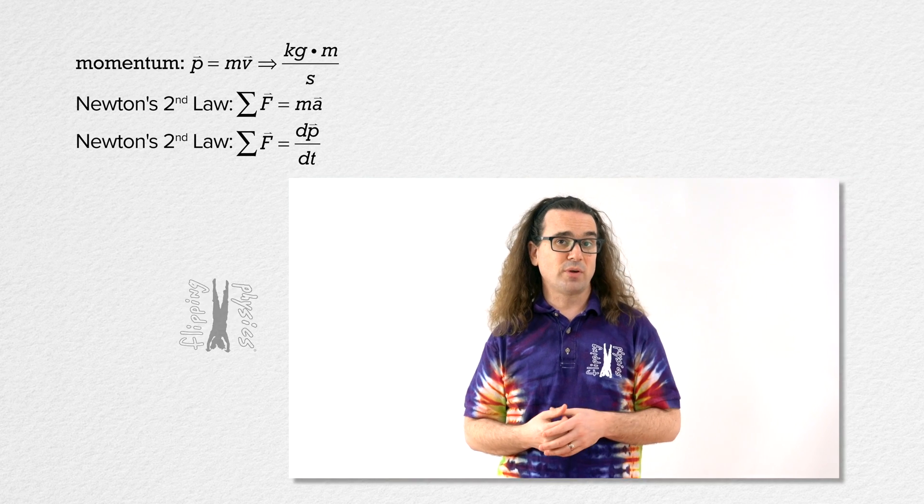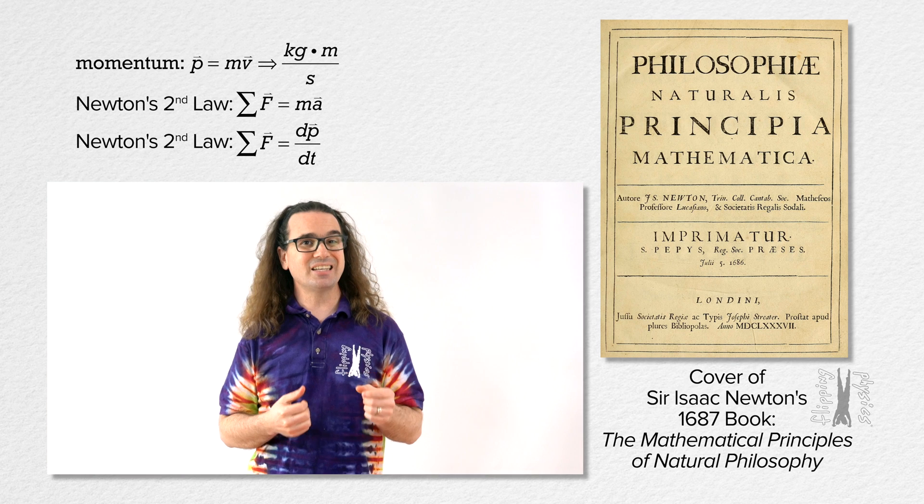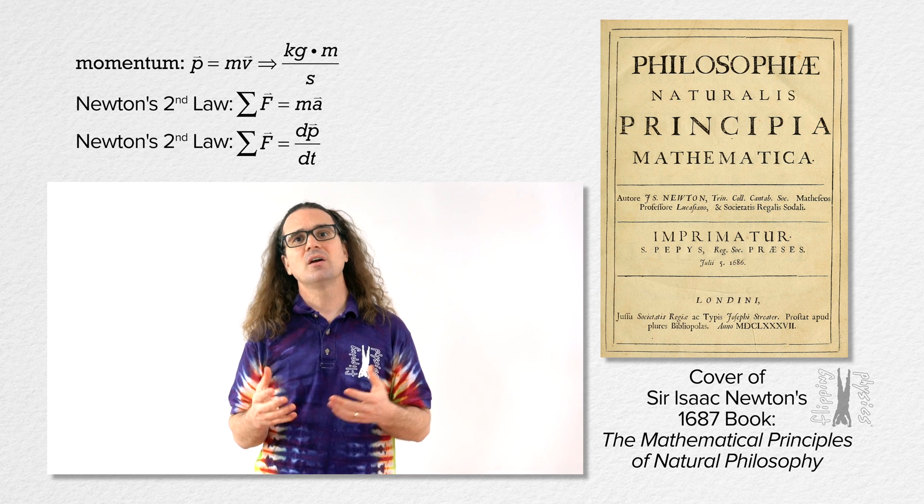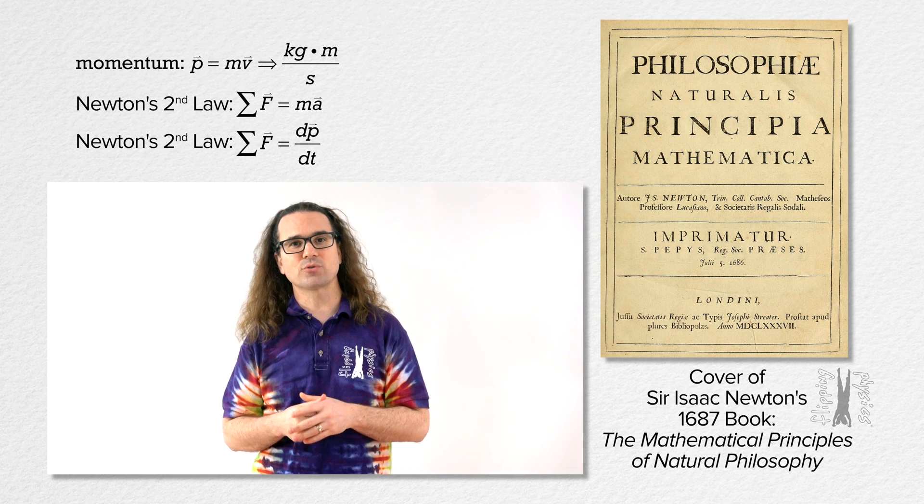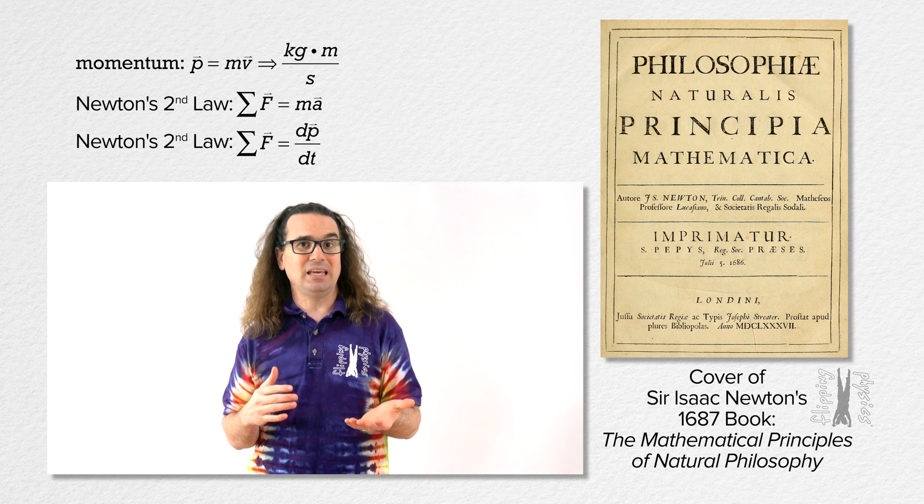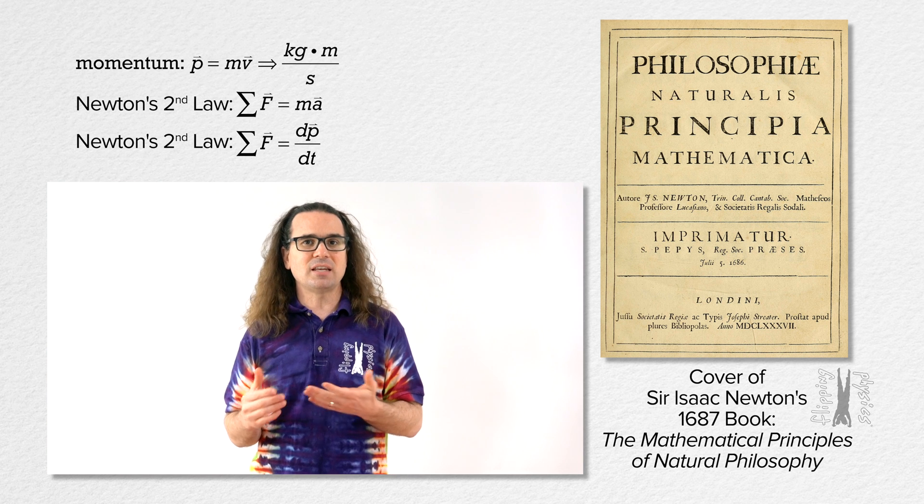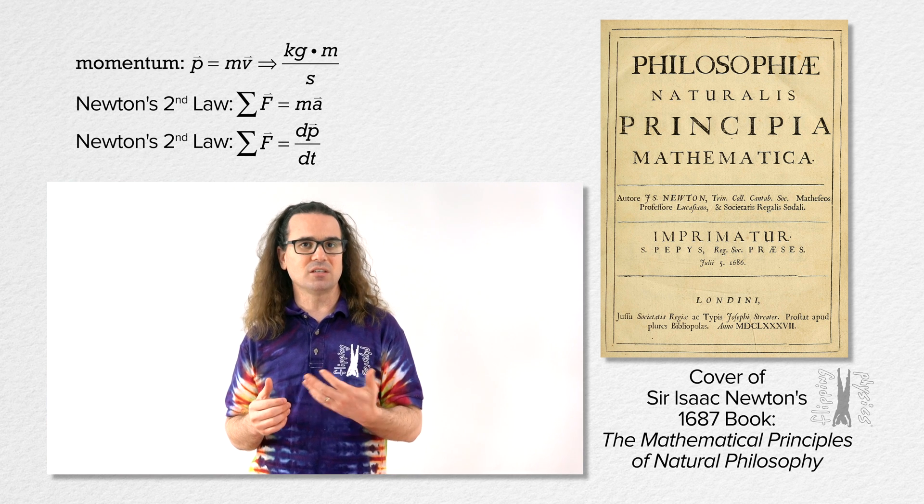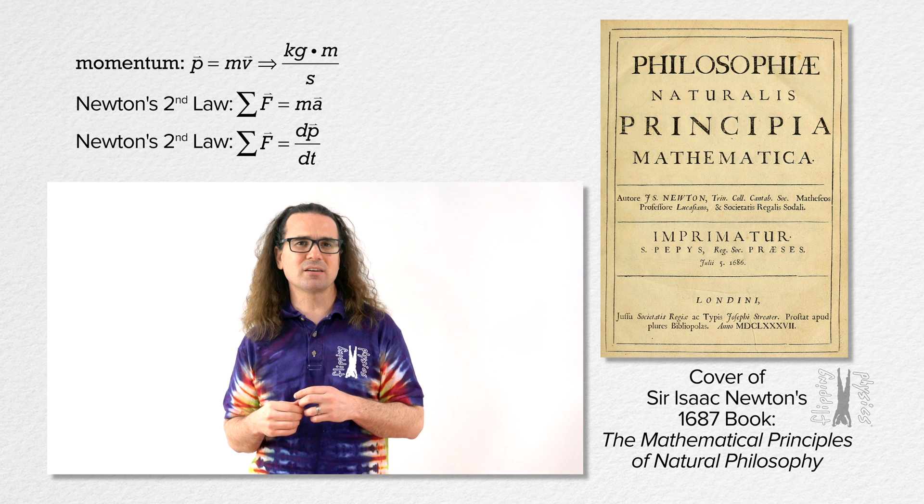Newton's original three laws were published in 1687 in his book titled The Mathematical Principles of Natural Philosophy. Actually, it was three books and he published them three times in 1687, 1713, and 1726, each time correcting and improving on his theories.